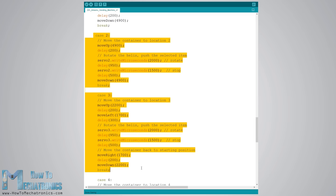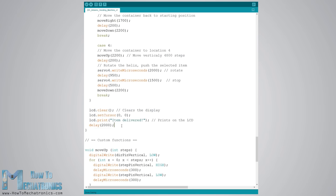Then using the move right and move down custom functions we bring the carrier back to the starting position. In the same way we can discharge any of the 4 items. At the end we just print the message item delivered. So it's that simple.